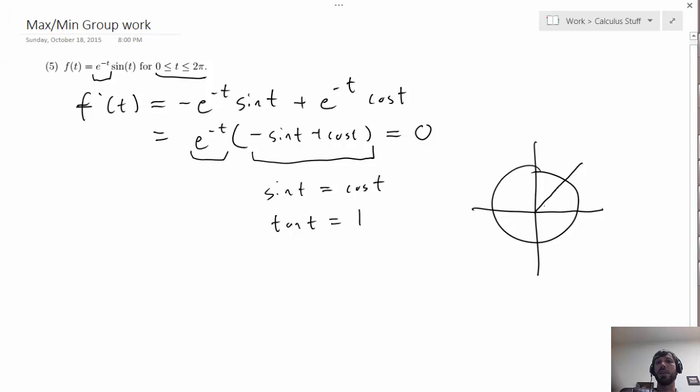The two places where the slope is going to be 1 are going to be at π over 4 and at 5π over 4. And so those would be our two critical values for the function, our critical numbers.